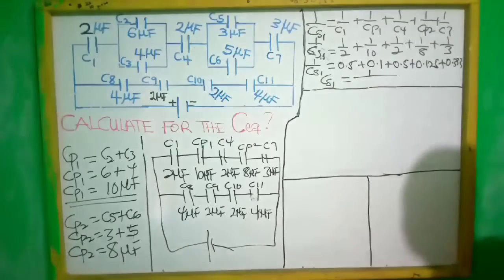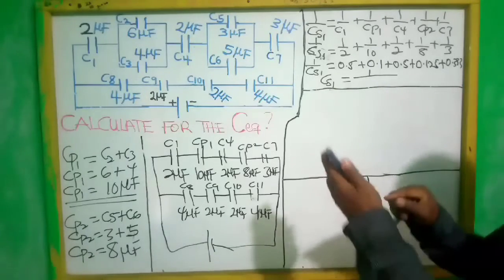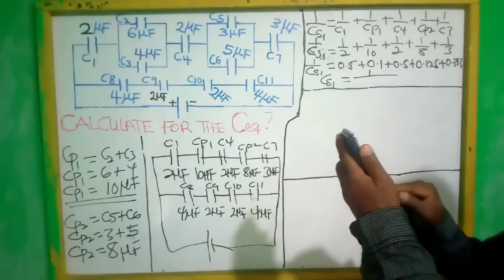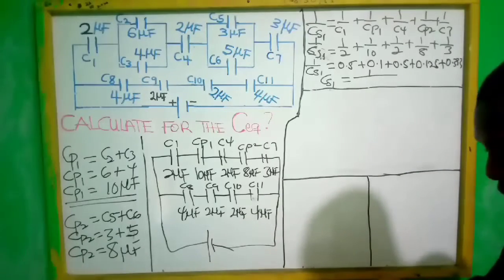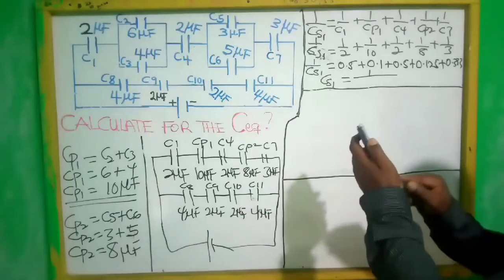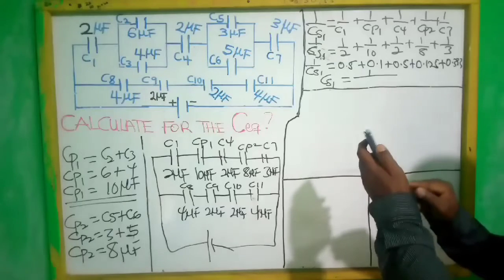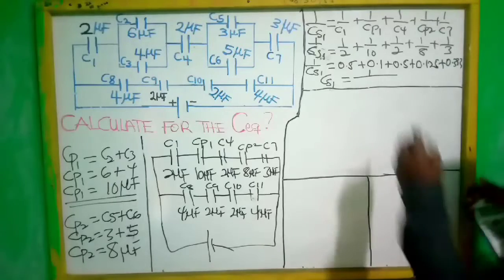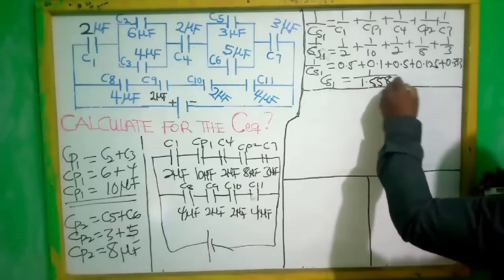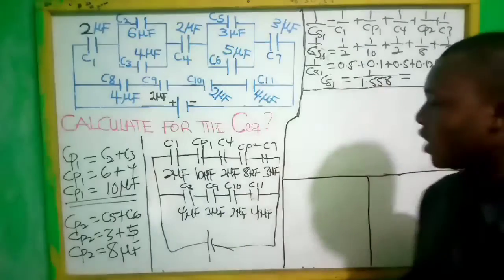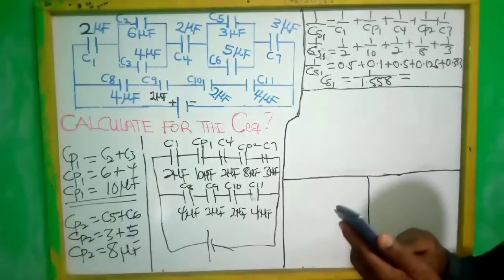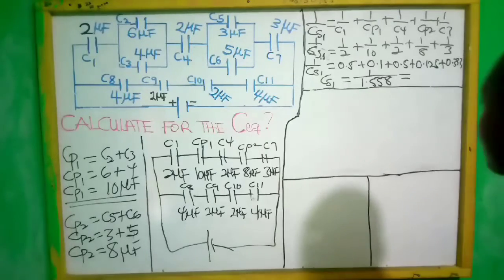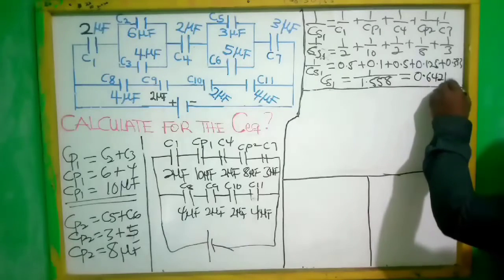Adding these up: 0.5 + 0.1 + 0.5 + 0.125 + 0.333 = 1.558. Therefore C_series1 = 1 divided by 1.558, which gives us 0.642 microfarads.